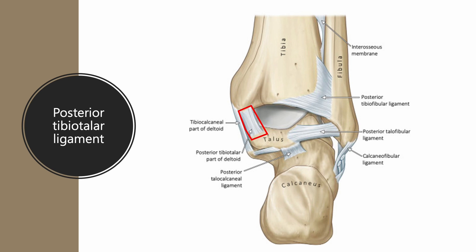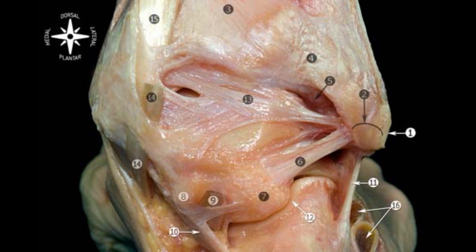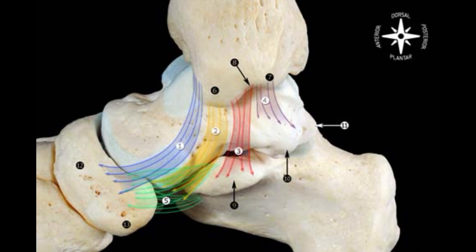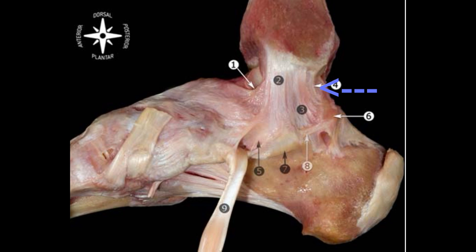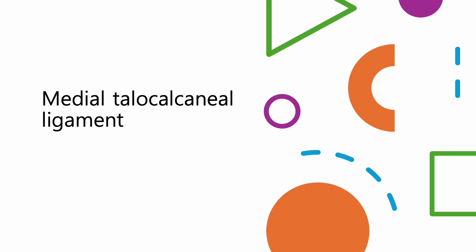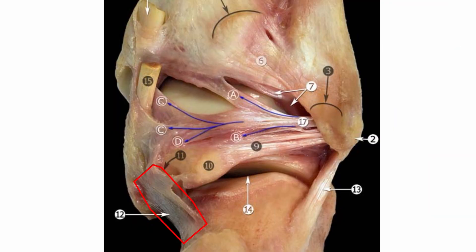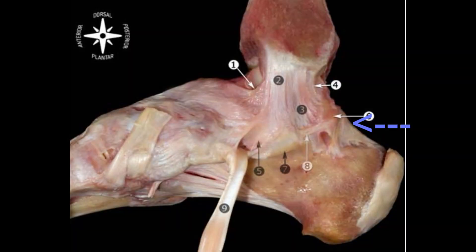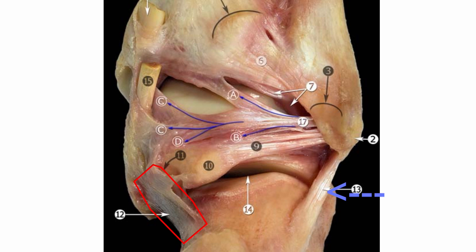Posterior tibiotalar ligament. This ligament is part of the deltoid ligament complex, located on the medial posterior side of the ankle. It connects the medial malleolus's posterior edge to the talus bone's posterior part. You could observe the posterior talofibular ligament laterally when observing the dissection image's posterior surface. Medial talocalcaneal ligament. Inferior to the posterior tibiotalar ligament, the medial talocalcaneal ligament connects the medial side of the talus to the sustentaculum tali of the calcaneus. This ligament is situated beneath the deltoid ligament, and you could note its symmetry with the lateral calcaneofibular ligament on the lateral side, except that it attaches to the talus rather than the tibia.